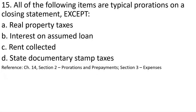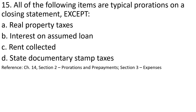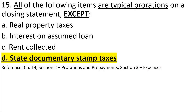Number fifteen: All of the following items are typical prorations on the closing statement except state documentary stamp taxes. Property taxes go toward the county, city, and school board, but documentary stamp taxes go to the state of Florida. Items like the promissory note tax, tax on the deed, and intangible tax are all paid to the state of Florida.